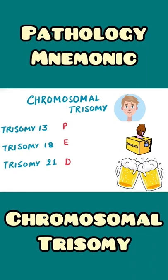Hello everyone, the NerdBerry here. In this video we will learn about a quick mnemonic to remember the chromosomal trisomies. The trisomies which are mostly encountered in exams are trisomy 13, trisomy 18, and trisomy 21.